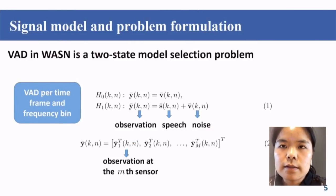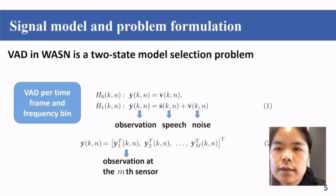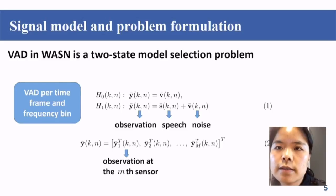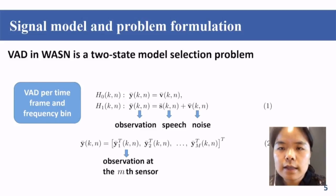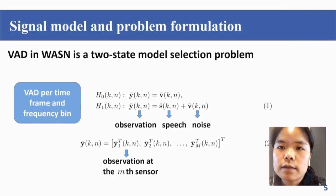VAD in WSN is actually a two-state model selection problem. As shown in equation one, the first state shows that the observation signal only contains noise, meaning speech is absent. The second state is that the observation signal contains both a speech signal and a noise signal, meaning speech is present. We use the observation signal vector to detect the on and off behavior of human speech in the noisy signal.